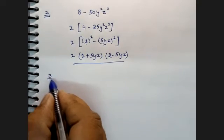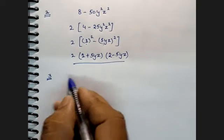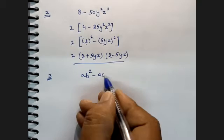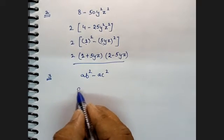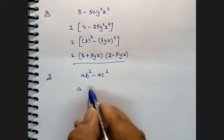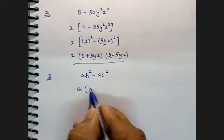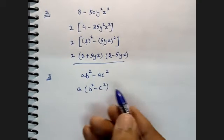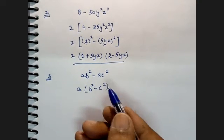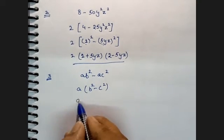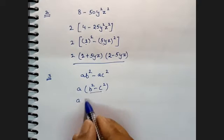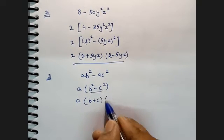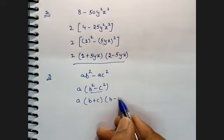Third sum: AB squared minus AC squared. What is common between these two? A is common. What is left? B squared minus C squared. The rule followed is first common, then identity. So we get A into B squared minus C squared, which by A squared minus B squared identity equals A into B plus C into B minus C. This is the answer.